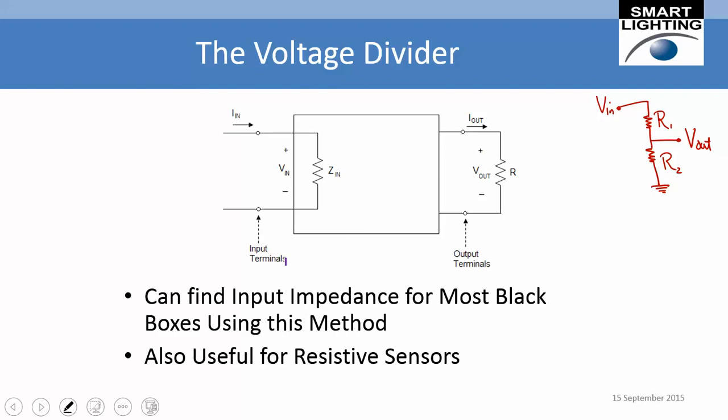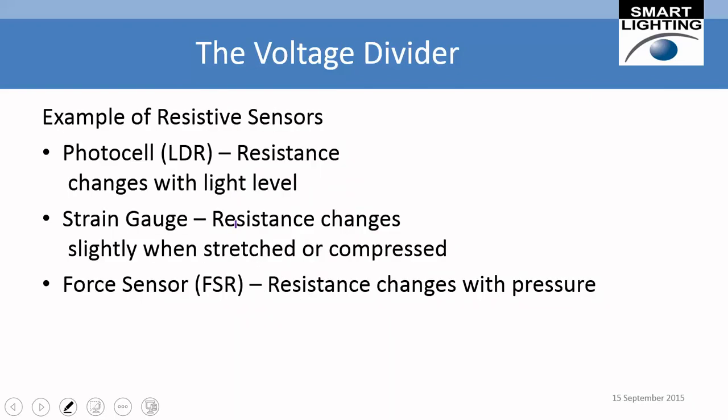The voltage divider can also be used to find the input impedance of most black boxes by connecting a divider across the input. It's also useful for resistive sensors — examples include a photocell, a strain gauge, and a force sensor.